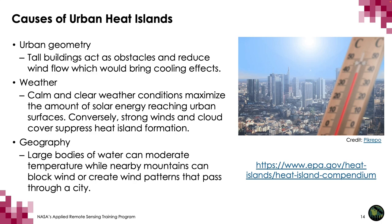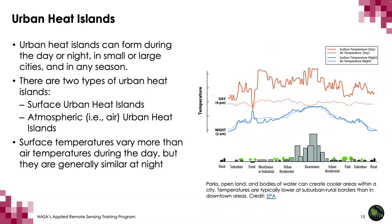Geographic features can also impact the heat island effect. Large bodies of water can moderate temperature while nearby mountains can block wind or create wind patterns that pass through a city. Urban heat islands can form during the day or night, in small or large cities, and in any season. Urban-rural temperature differences are often largest during calm, clear evenings because rural areas cool off faster at night than cities, which retain much of the heat stored in roads, buildings, and other structures. As a result, the maximum heat island effect is often hours after sunset.